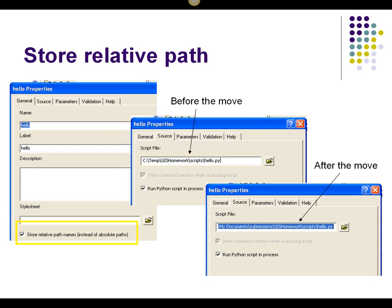It's a good habit to always check 'store relative path names.' However, you then need to maintain the same relative path structure when you share it.